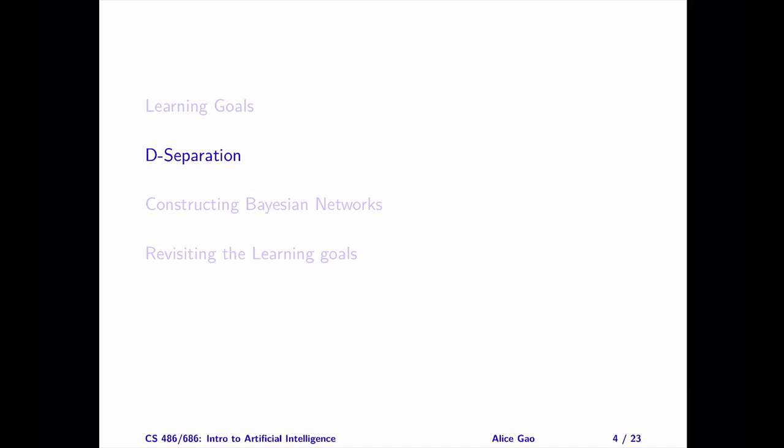Let me summarize. After watching this video, you should be able to explain the D-separation definition. In particular, what does it mean for a node to block a path? Thank you very much for watching. I will see you in the next video. Bye for now.